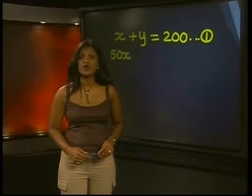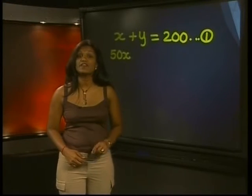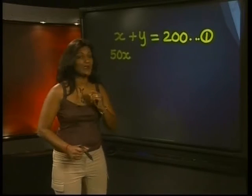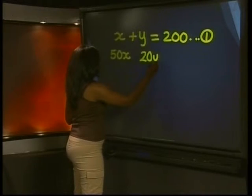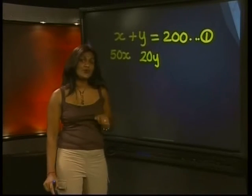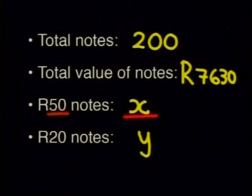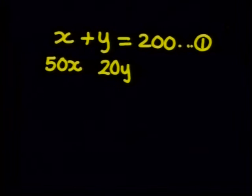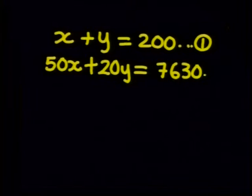For the value of all the 20 rand notes we multiply the number of notes by the value. So we have y times 20 or 20y. Can you write an equation using 50x and 20y? That's not difficult since we know that the total amount of money is 7630. So we can write this equation as 50x plus 20y is equal to 7630. And we'll call this equation 2.